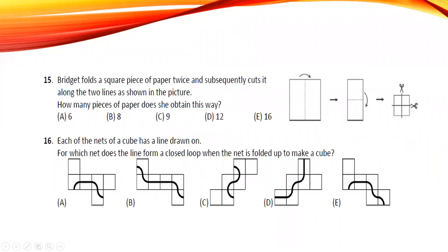Brigitte folds a square of paper twice and subsequently cuts it along two lines as shown. I suggest you try it practically: take a piece of paper, fold it twice, make the cuts, and you will get exactly 9 pieces. Just do it as an experiment and you can easily confirm the answer is nine.